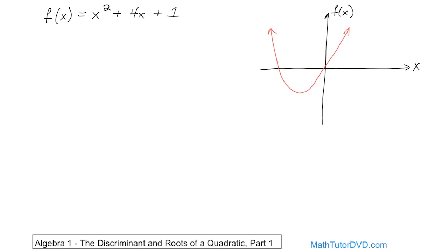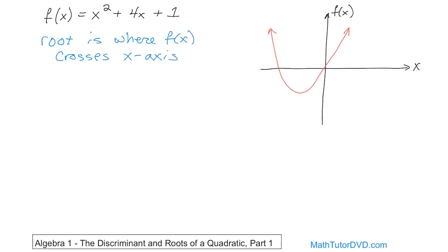Now we have a couple of terms that we need to introduce. The first one is the concept of a root of a quadratic. The root is where the function f of x crosses the x-axis. You can see right here that this function comes down, it crosses the x-axis here, then it goes below, and then it crosses the x-axis over here. So this function has two crossings of the x-axis, which we're now renaming and calling roots.